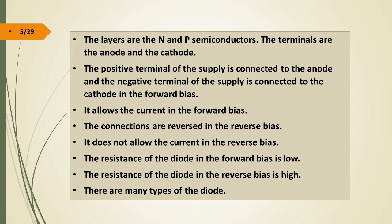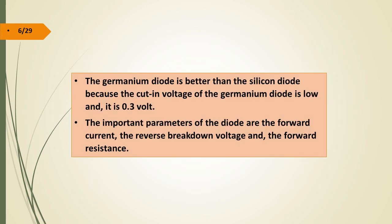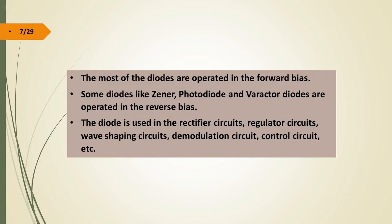There are many types of diode. The germanium diode is better than the silicon diode because the cut-in voltage of the germanium diode is low at 0.3V. The important parameters are the forward current, reverse breakdown voltage, and forward resistance. Most diodes operate in forward bias; however, some diodes like the zener, photo diode, and varactor diode operate in reverse bias. The diode is used in rectifier circuits, regulator circuits, wave shaping circuits, demodulation circuits, and control circuits.